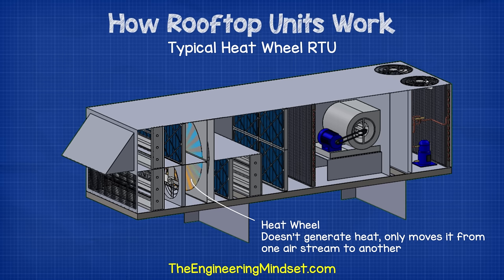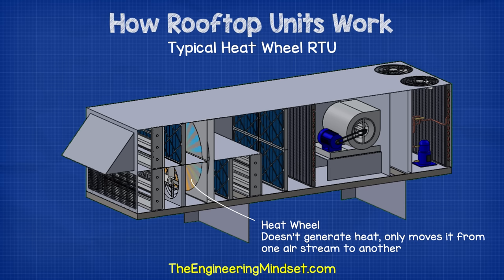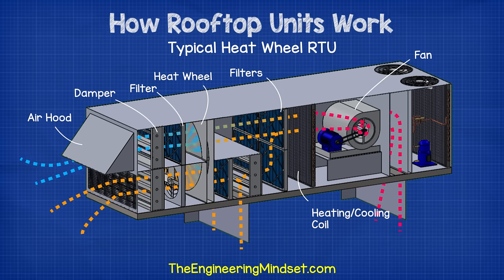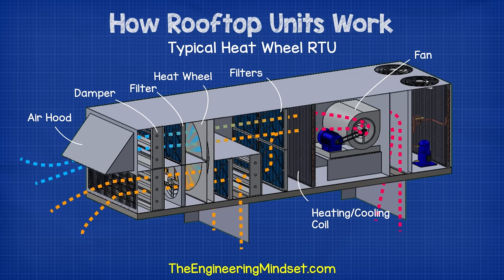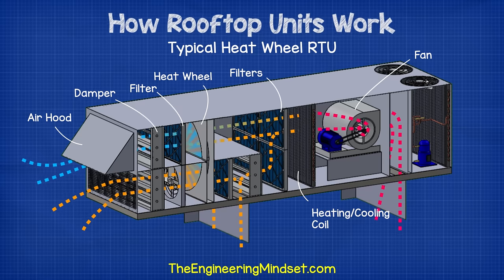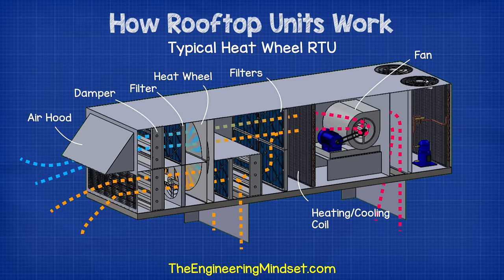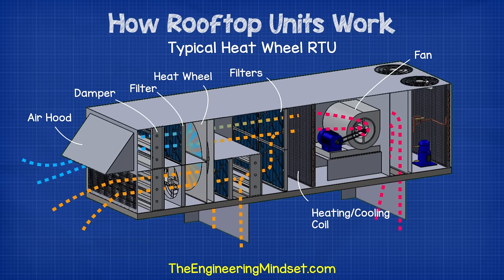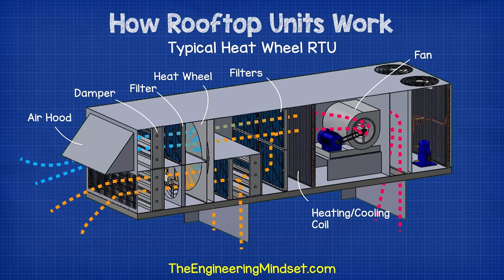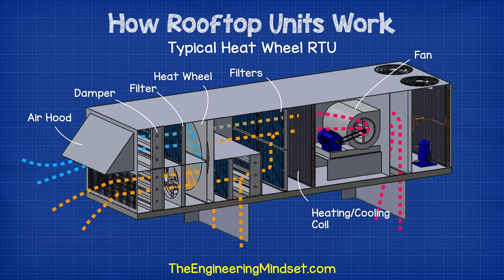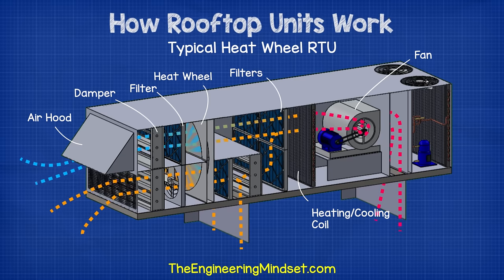The final version we'll look at has a heat wheel built into the unit. This is growing in popularity due to increasing need for energy efficiency in buildings to reduce CO2 emissions as well as energy and utility costs. This unit first pulls air in through the hood; the amount of air is controlled by the damper. The air passes through a filter to catch dirt and dust and protect the heat wheel surface, then passes through the heat wheel — a rotating heat exchanger that picks up waste heat from the return discharge air and transfers it to the incoming fresh air without the two airstreams mixing.